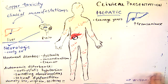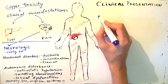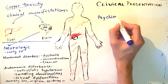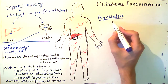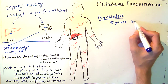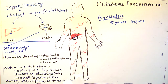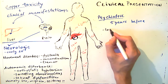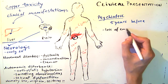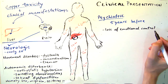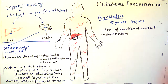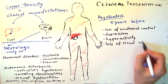Patients with neurological problems may also have psychiatric symptoms. The psychiatric symptoms usually occur five years before the diagnosis of Wilson's disease. They can manifest as behavioral disturbances. The patient might have loss of emotional control, depression, hyperactivity, or loss of sexual inhibition.